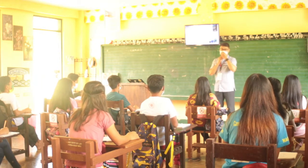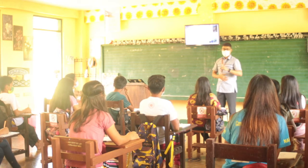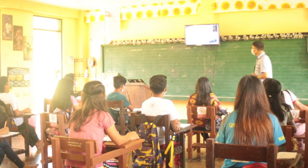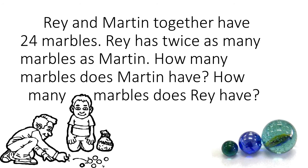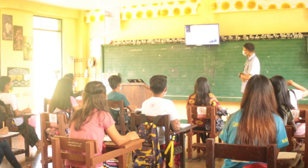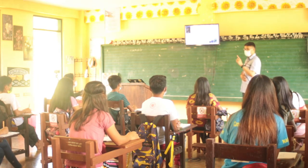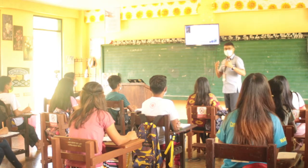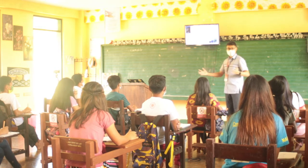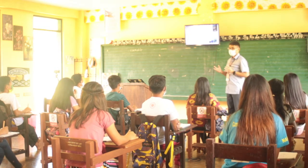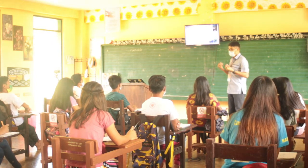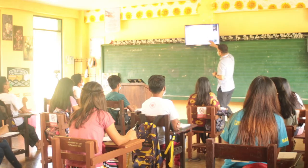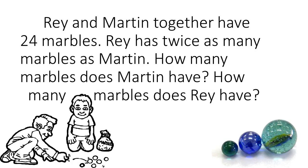How many marbles do they have together? 24 marbles. What is the first question? How many marbles does Martin have? The first sentence tells us that Ray and Martin together have marbles — the two of them. So if you combine all their marbles, they'll have 24. But in the second sentence: Ray has twice as many marbles as Martin.